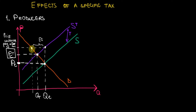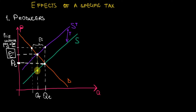Now let's consider how much money the firm actually gets to keep. From the price that customers pay, the firm keeps the amount minus the tax, because the firm has to pay that tax to the government. So basically we have to move down to the green curve — the original one without the tax — because the tax goes to the government. The price the firm actually gets to keep is represented by this yellow dot, which I'll call PFT — price firm keeps after tax.